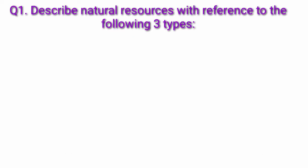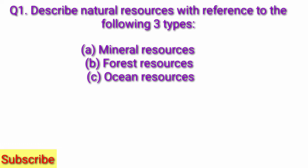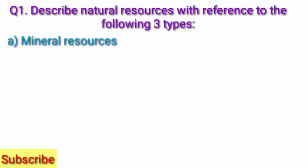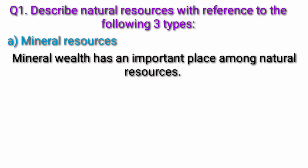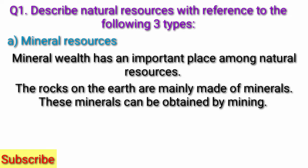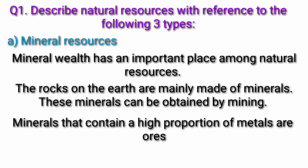Question 1: Describe natural resources with reference to the following three types: a) mineral resources, b) forest resources, c) ocean resources. Answer a) Mineral Resources: Mineral wealth has an important place among natural resources. The rocks on the earth are mainly made of minerals. These minerals can be obtained by mining.